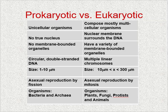Both are capable of asexual reproduction; however, prokaryotic cells reproduce by fission and eukaryotic cells reproduce through mitosis. Prokaryotic cells compose organisms within the bacteria and archaea kingdoms, and eukaryotic cells make up organisms in the plant, fungi, protists, and animal kingdoms.